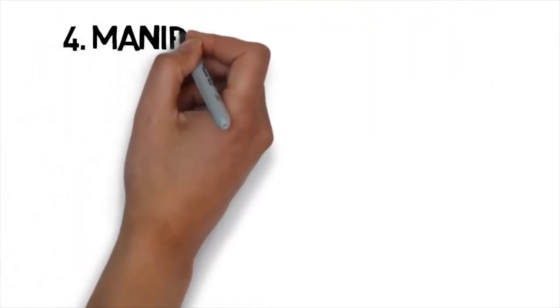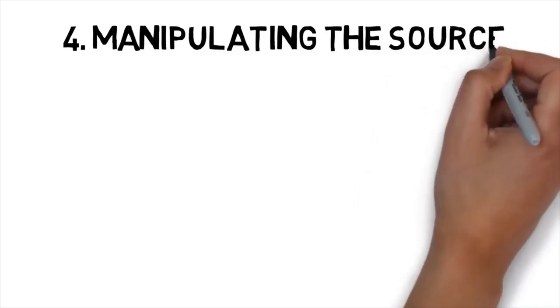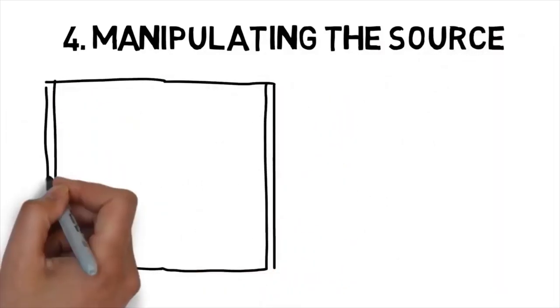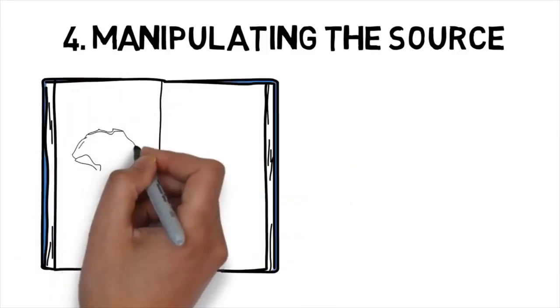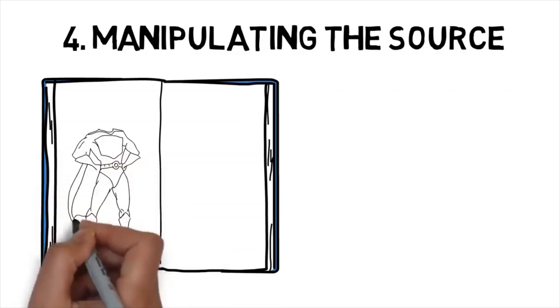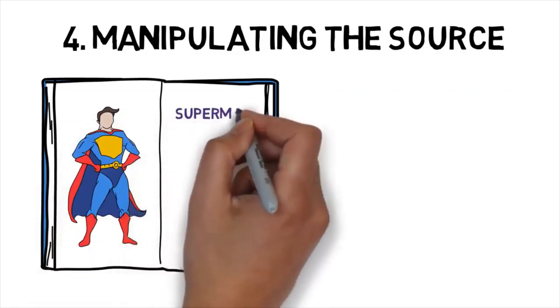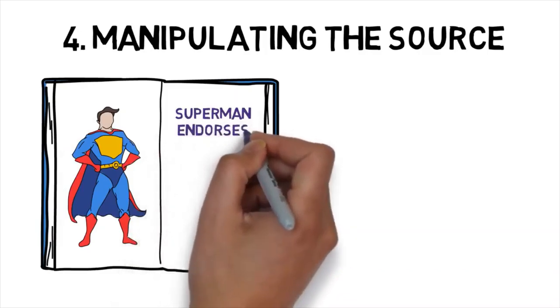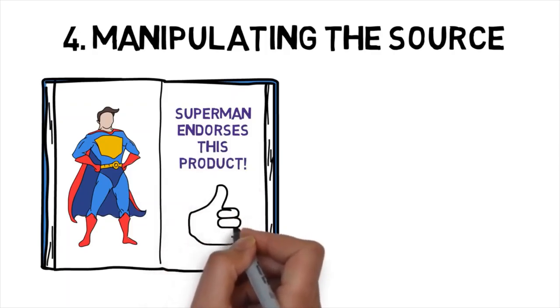Number 4. Manipulating the source. Sometimes the source of a message matters a lot more than the message itself. People will believe anything you say, as long as you're on television or featured in a magazine. This can be dangerous, especially when it comes to things like the media or other critical institutions. However, you can also use this to your advantage if you're trying to persuade someone. I call this manipulating the source, and it's very powerful.